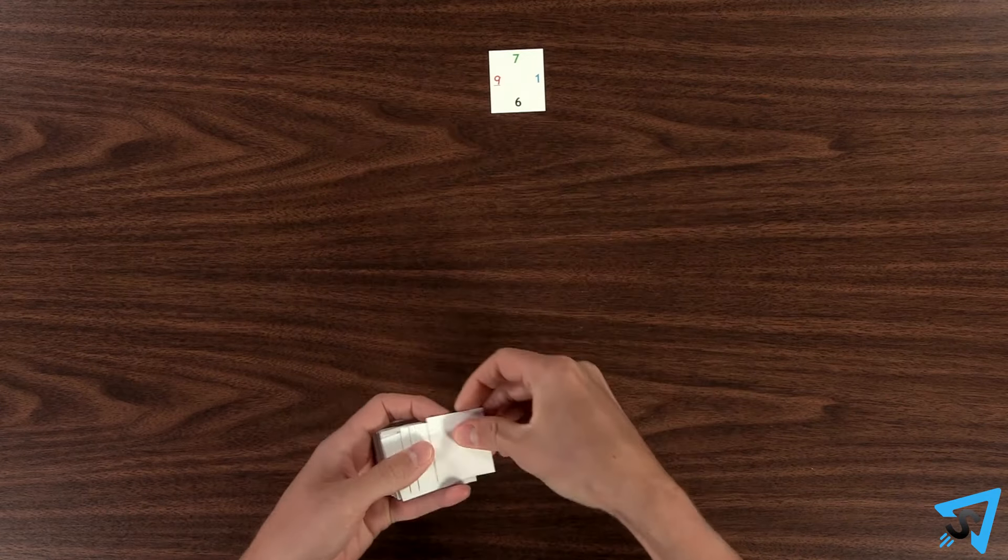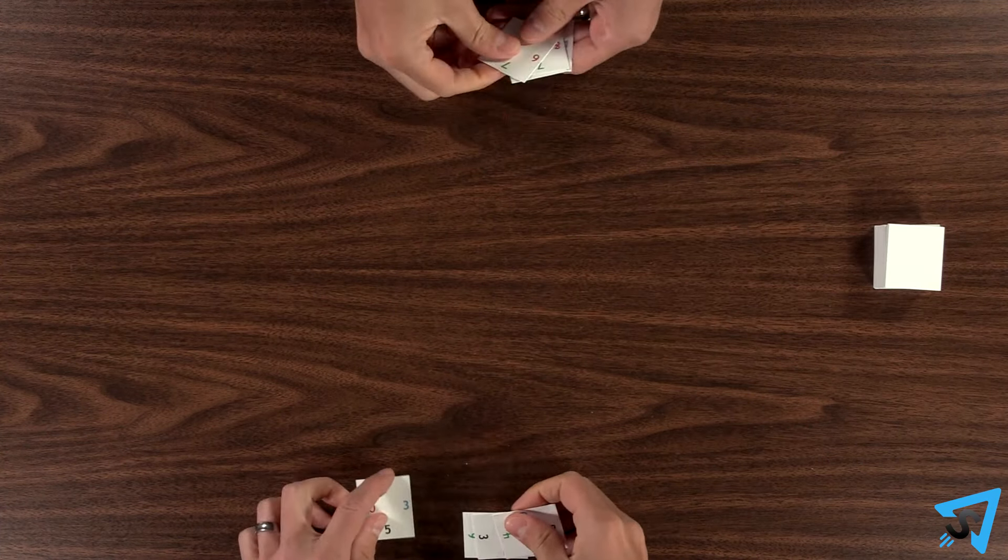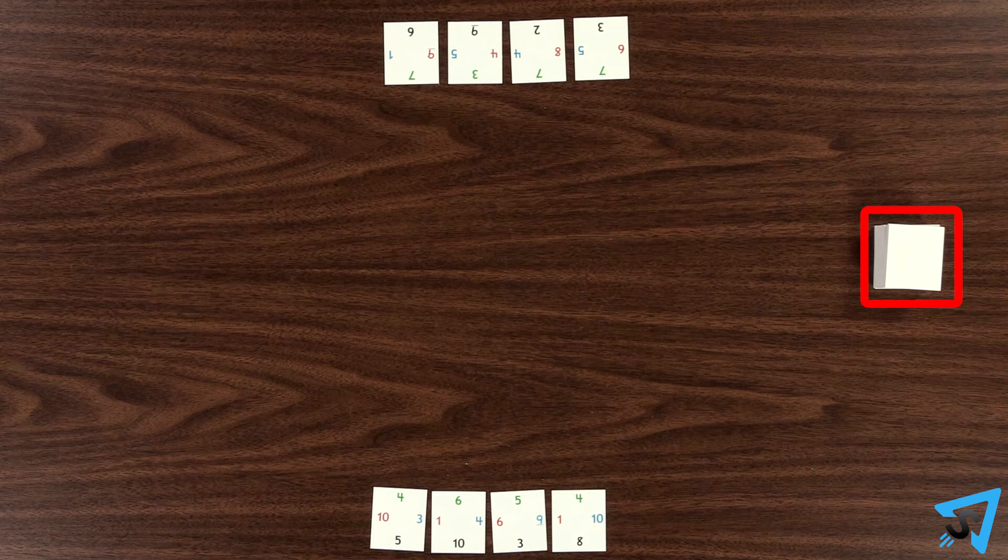Shuffle the deck, then deal four cards face up to each player. Players keep their cards face up in front of them while the rest of the deck is placed face down to the side as a draw deck.